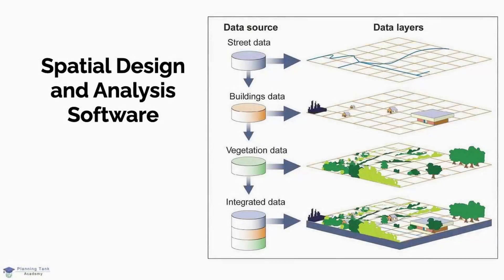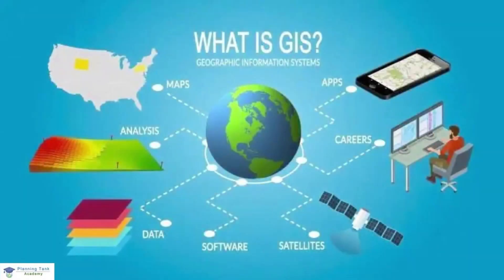In this video we shall be looking at commonly used softwares for spatial design and analysis. As planners deal with land mapping and spatial analysis, visualization becomes one of the most important and recurring tasks. This is where GIS — Geographic Information Systems — steps in. A GIS integrates hardware, software, and data for capturing, managing, analyzing, and displaying all forms of geographically referenced information.